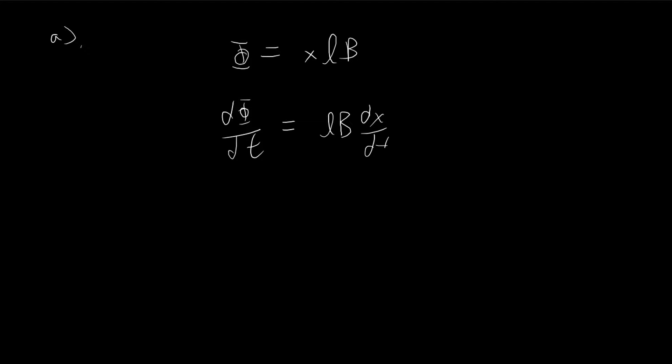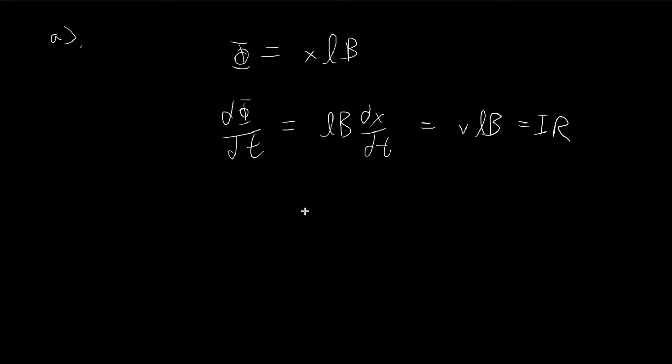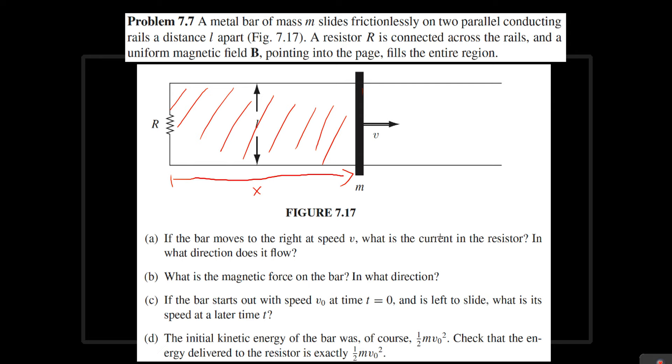The change in flux is going to be equal to the induced EMF. L and B are just constants, and then we have dx/dt. dx/dt is actually just going to be equal to V, because the change in this distance is the velocity of this rod. So this is the induced EMF, and that is going to be equal to IR. So the current is equal to VLB divided by R. So this is the answer.